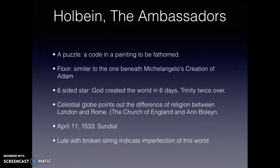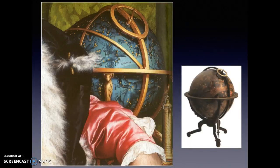You also have a celestial globe, which points out the difference of religion between London and Rome. This was happening during the time when Henry VIII was fighting with the Church of England and trying to marry Anne Boleyn. On the sundial inside the picture, the date points to April 11, 1533, which is Easter Sunday. You also have a lute with a broken string, pointing to the imperfection of this world.